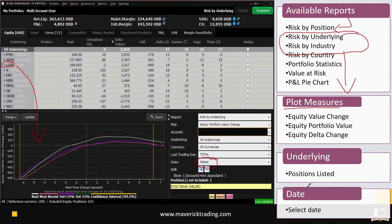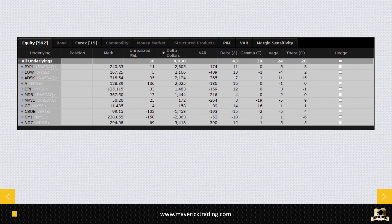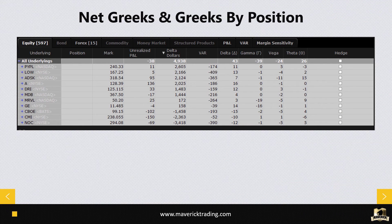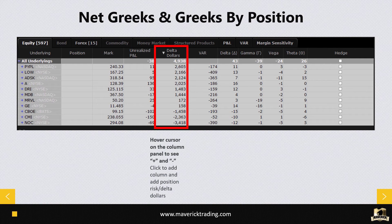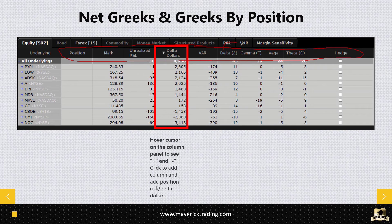The top report — net Greeks positions — is a great place to see where you stand. At first you likely won't have the delta dollars column; I highly recommend adding it. Hover your cursor in the top section, hit the plus button, and add delta dollars — placing it right before the delta column. This report shows all your Greeks at a glance.